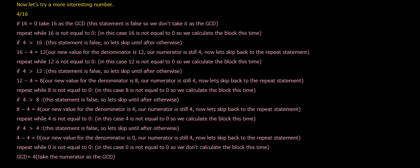Now let's skip back to the repeat statement. Repeat while 8 is not equal to zero. In this case, 8 is not equal to zero, so we calculate the block this time. If 4 is more than 8, this statement is false, so let's skip until after otherwise. 8 minus 4 equals 4. Now our new value for the denominator is 4. Our numerator is still 4.